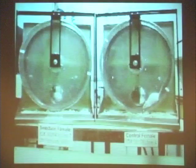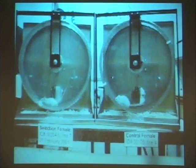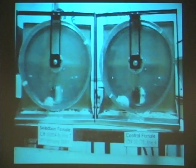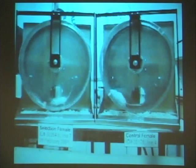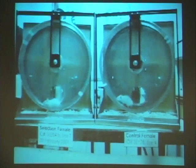In this video, on the right you have a mouse from a control line — she's not doing a whole lot, occasionally running a little. On the left, the selected-line mouse is running like crazy at much higher speed — she even does a 360 and keeps going. You can see a radical difference especially in running speed between selected and control line mice.